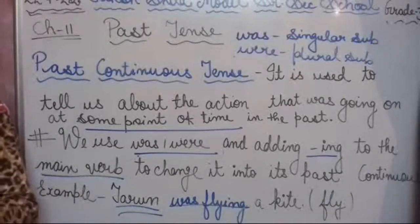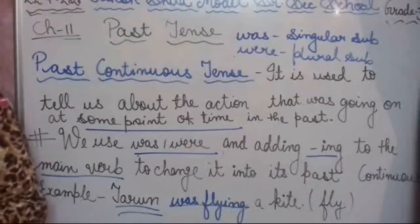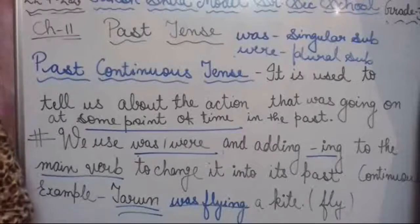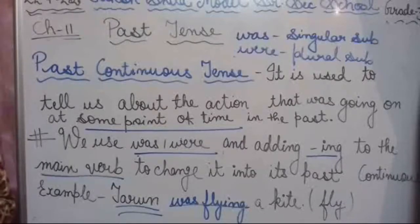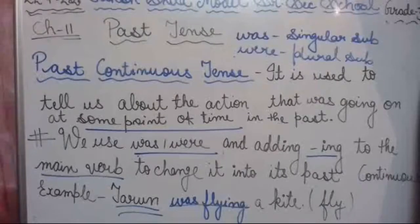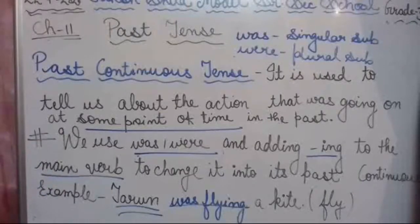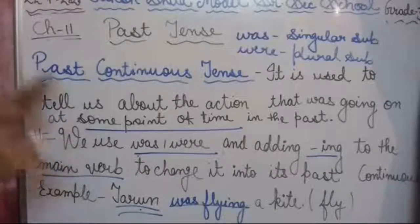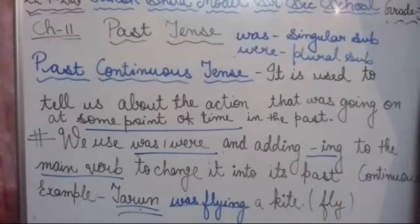More examples: 'Riya was singing a song.' For plural subjects: 'Teachers were teaching,' 'Children were playing,' 'Doctors were treating the patients,' 'The dogs were barking at the strangers.' You have to remember where to use 'was' and where to use 'were,' paying attention to the subject. I hope this topic and the whole chapter are clear to you. Thank you.